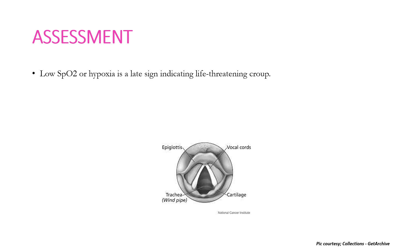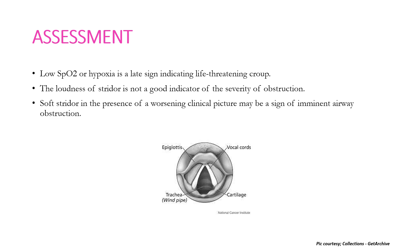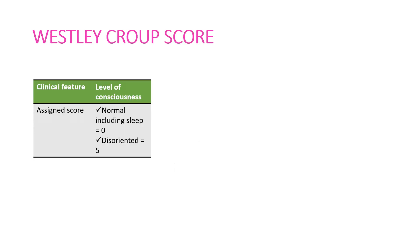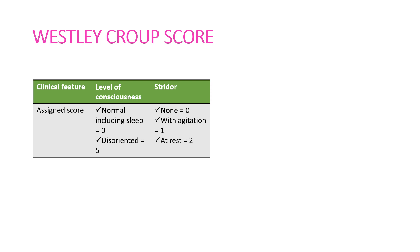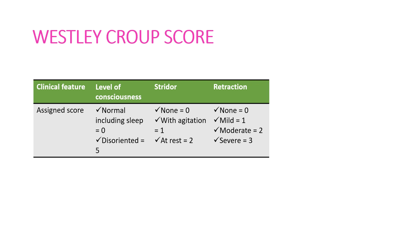Assessment of the severity of airway obstruction can be done using the Wesley Croup Score. Croup is a disease of the upper airway, and gas exchange in the alveoli is generally unaffected; therefore, low SpO₂ or hypoxia is a late sign indicating life-threatening croup. The loudness of stridor is not a good indicator of severity — soft stridor in a worsening clinical picture may indicate imminent airway obstruction. The Wesley score assesses level of consciousness: normal scores 0, disoriented scores 5. Stridor: absent 0, with agitation 1, at rest 2. Retractions: none 0, mild 1, moderate 2, severe 3.